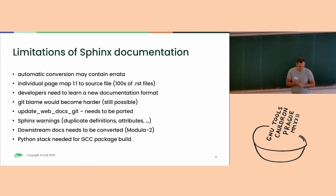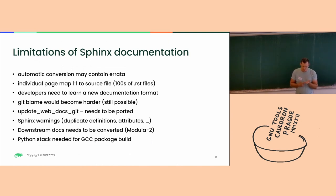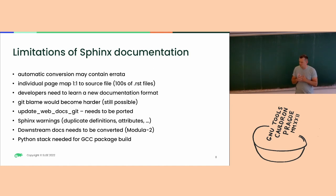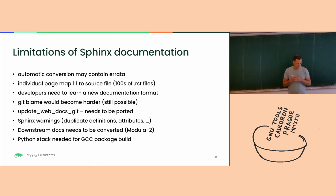The good git blame will be harder. We have some scripts which upload the documentation which I can modify. We'll get new Sphinx warnings because we document attributes multiple times, as mentioned, so I'll need to create probably target-specific attribute names.